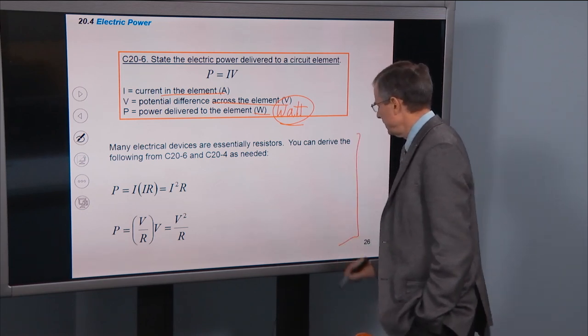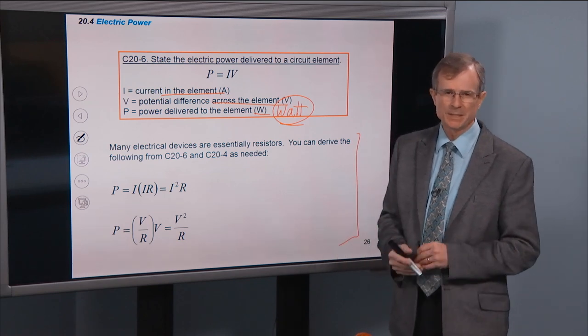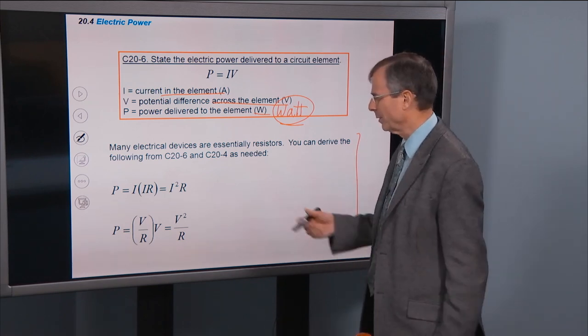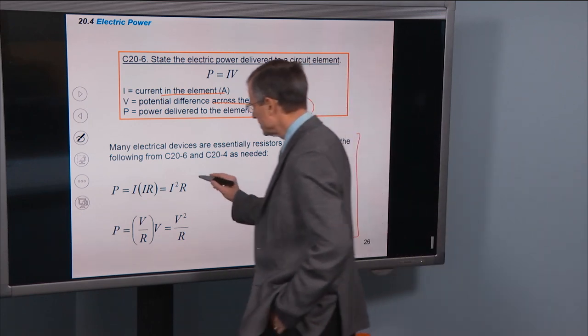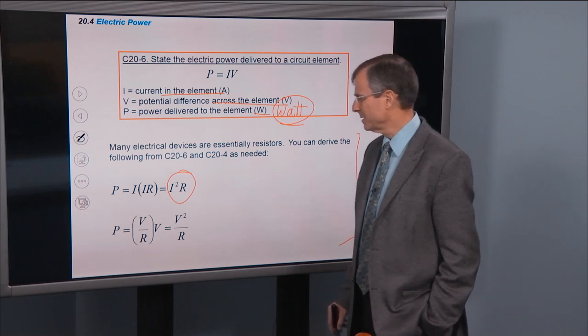Now, I'm not asking you to memorize these because it's silly to memorize them, because you can just do a tiny bit of algebra to get to these other forms for the power. This is a very common form when you're thinking about resistors. How do you get to this form?